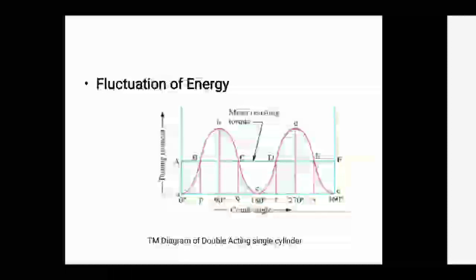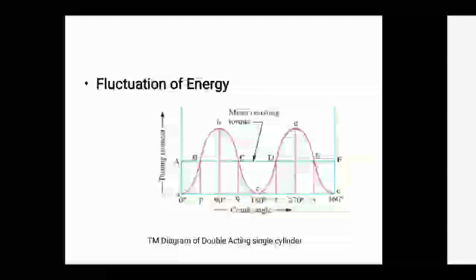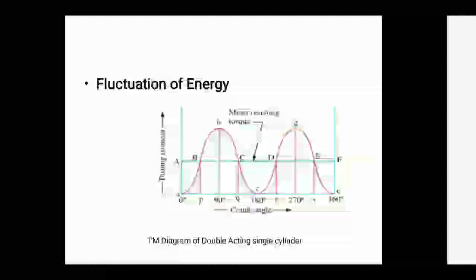This completes the turning moment diagram explanation for a double-acting single-cylinder engine. There is a variation of energy above and below the mean resisting torque, from maximum to minimum — this is known as the fluctuation of energy. The areas BBC, CCD, and DDE represent this fluctuation of energy. The difference between the maximum and minimum energy is known as the maximum fluctuation of energy.